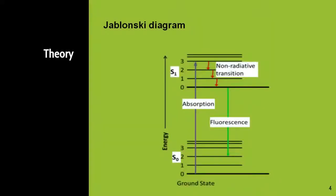Let us see the Jablonski diagram depicting fluorescence. Here you can see electrons going from the ground state to the excited state by gaining energy, then they drop to the lower vibrational state — this is the non-radiative transition. From the lower vibrational state they drop down to the ground state, and during this they emit light, hence showing fluorescence. S0 and S1 represent the spin states.